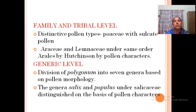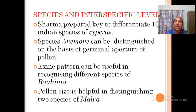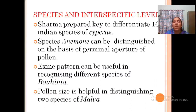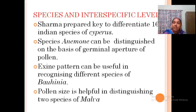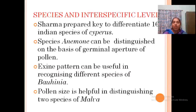At species and interspecific level, Sharma prepared a key to differentiate 16 Indian species of Cyperus (family Cyperaceae) mainly based on pollen characters. Species of Anemone are distinguished on the basis of germinal aperture of pollen. The exine pattern is also useful in recognizing different species of Bauhinia (Caesalpiniaceae), and pollen size is useful in distinguishing two species of Malva.